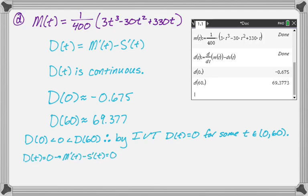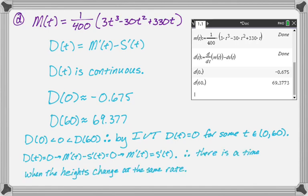If D of T is equal to 0, since D of T is M prime minus S prime, we automatically know that M prime minus S prime equals 0. If that is true, then we know that M prime is equal to S prime. Therefore, there is a time when the heights change at the same rate. And that was what the question asked for.